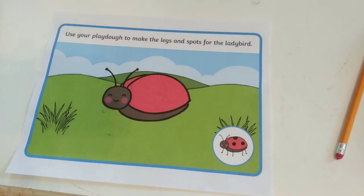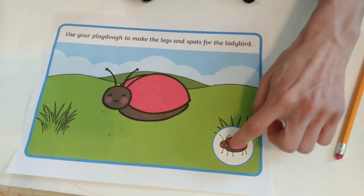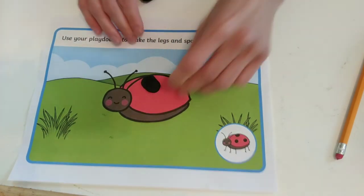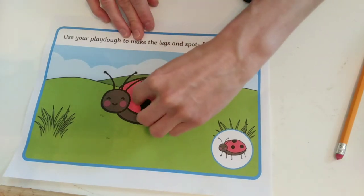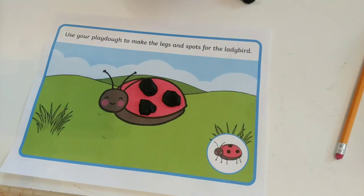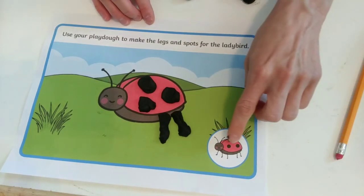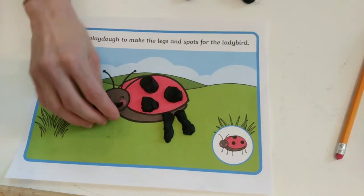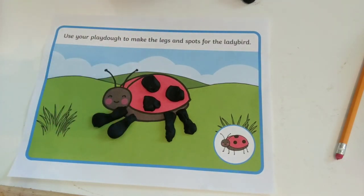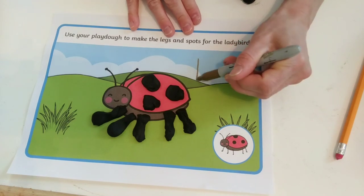It's a ladybug! And it says use your Play-Doh to make the legs and the spots for the ladybug. Some people call ladybugs ladybirds — even though they're not birds, they have wings like birds, right? So I'm going to make the spots — one, two, three spots for my ladybug. And then I'm going to draw or put Play-Doh for the legs — one, two in the back, and then the picture only shows three of the front legs, so I'll put three. Ladybug starts with letter L.